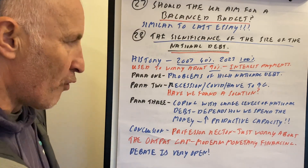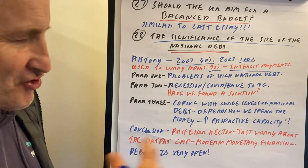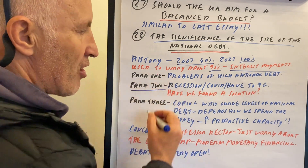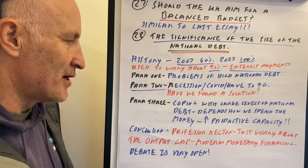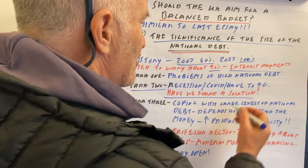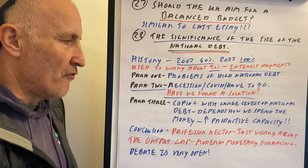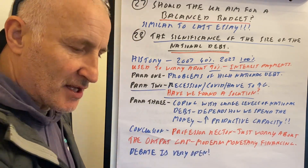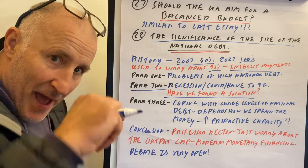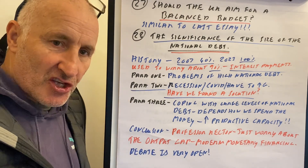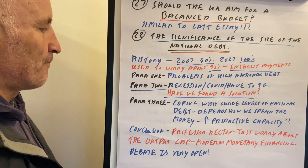Paragraph one covers the problems of high levels of national debt. Paragraph two is recession — you have to increase G. We found a solution to this because during Covid we used modern monetary financing, which is fundamentally the Bank of England printing money and giving it to the government to use, just like fiscal policy.